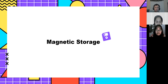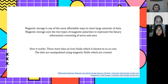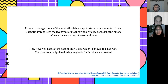For the first topic is magnetic storage. What is magnetic storage? Magnetic storage is one of the most affordable ways to store large amounts of data. Magnetic storage uses two types of magnetic polarities to represent binary information consisting of zeros and ones.